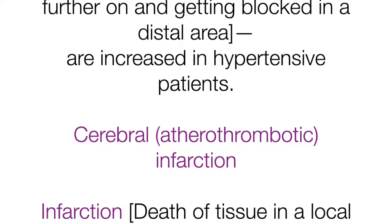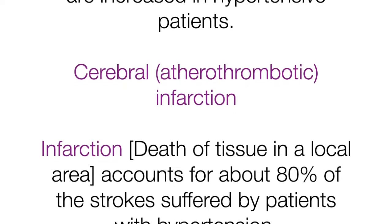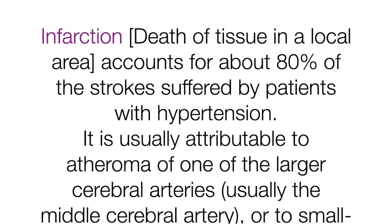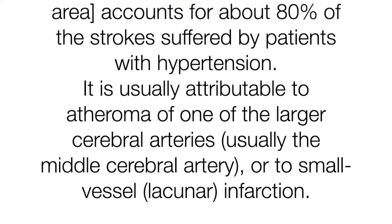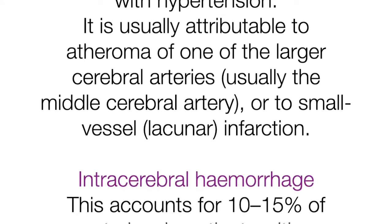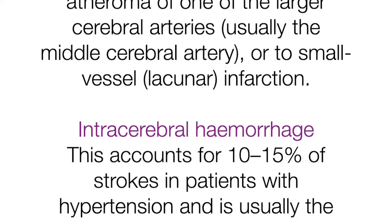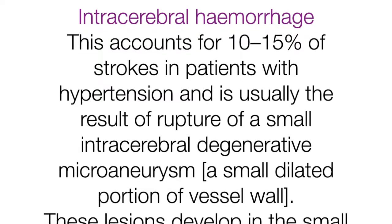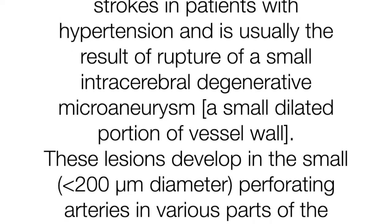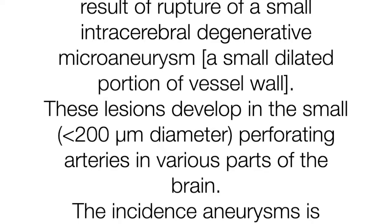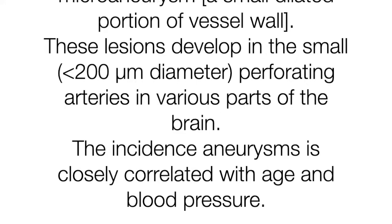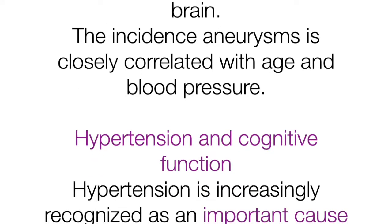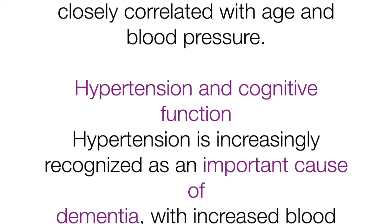Cerebral atherothrombotic infarction — death of tissue in a local area — accounts for about 80% of the strokes in patients with hypertension. It is usually attributable to atheroma of one of the larger cerebral arteries, usually the middle cerebral artery, or to small vessel (lacunar) infarction. Intracerebral hemorrhage accounts for 10–15% of strokes in hypertensive patients and is usually the result of rupture of a small intracerebral degenerative microaneurysm — a small dilated portion of a vessel — in perforating arteries below 200 micrometers in diameter. The incidence of these aneurysms is closely related to age and blood pressure.